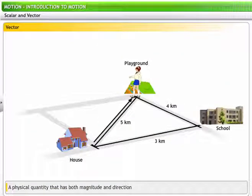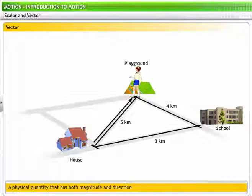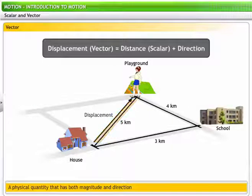On the other hand, a physical quantity that has both magnitude and direction is vector. A vector such as displacement is simply a scalar with direction.